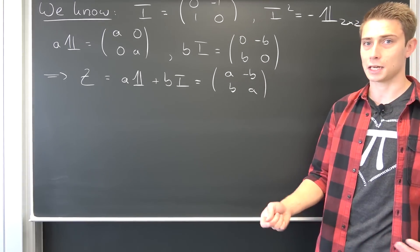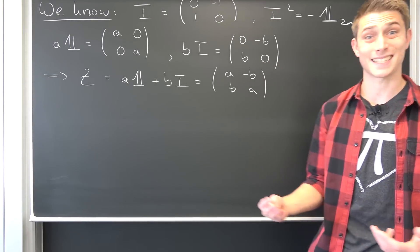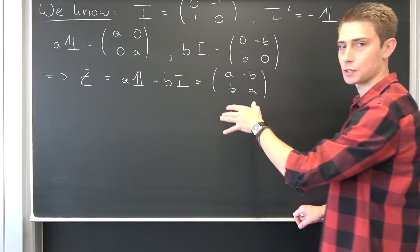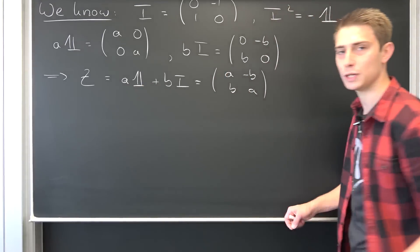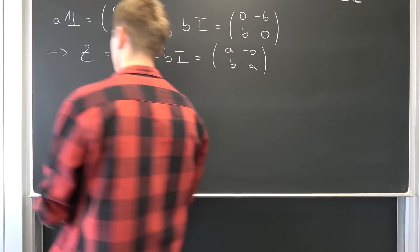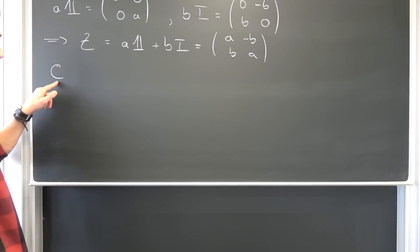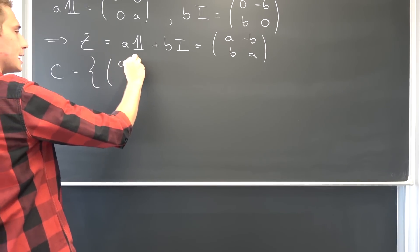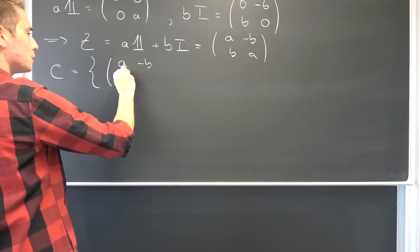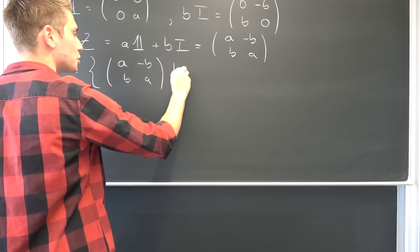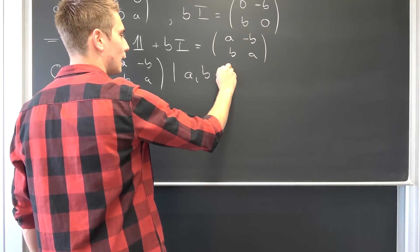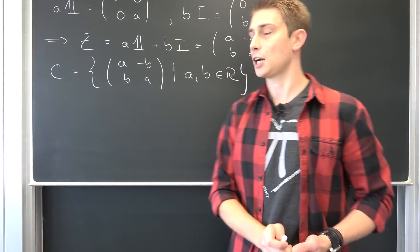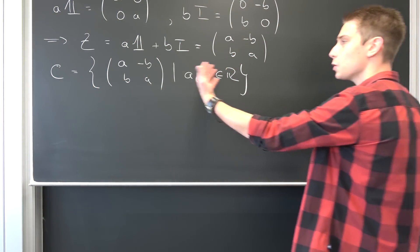We can construct the set of complex numbers — it's just a set of all matrices of this form with a and B being real numbers. The set of complex numbers, which I'll call capital Z, is thus the set of all matrices [a, -B; B, a] such that a and B are out of the real numbers. These are our generalized complex numbers and we can work with them.